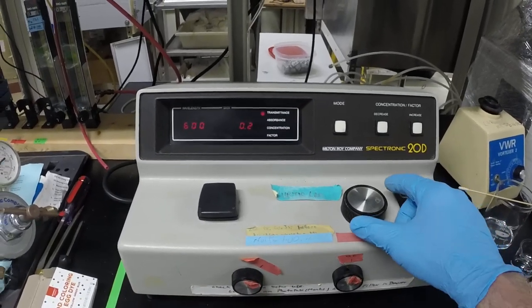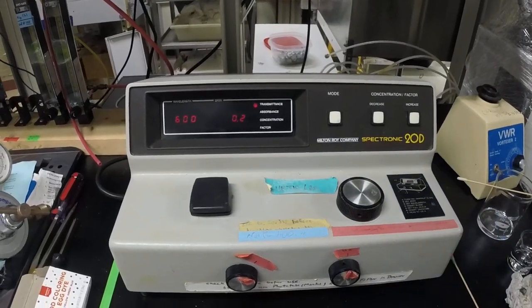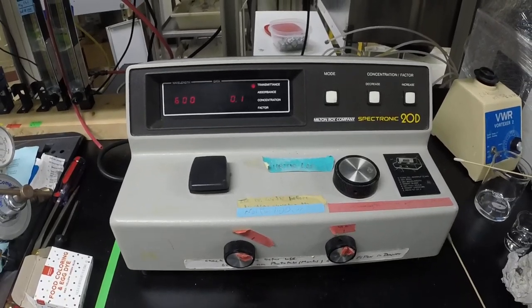At this point is where you would actually change the wavelength with this knob here. It can be a little touchy, so you have to work with that. We're set at 600, which is sort of typical for E. coli.